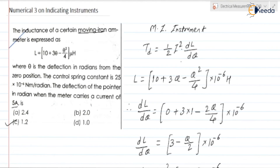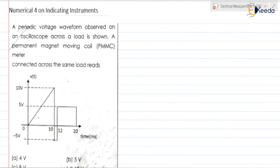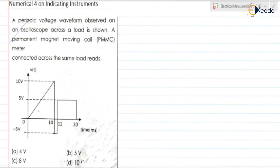This is a simple question — we only need to recall the expression for Td in the moving iron instrument. Numerical 4: a periodic voltage waveform observed on an oscilloscope across a load. A PMMC permanent magnet moving coil meter connected across the same load reads — we need to find its reading. The PMMC instrument measures only average values.